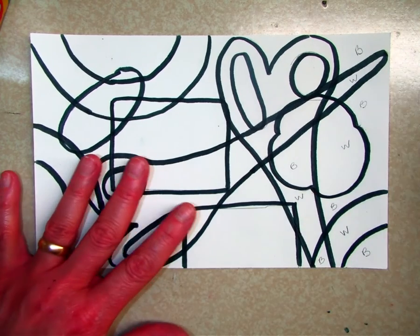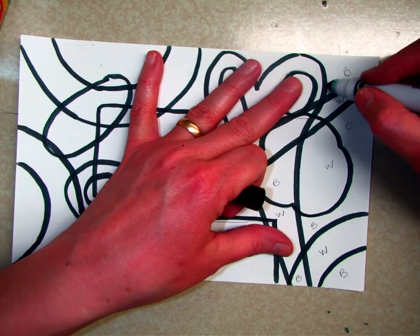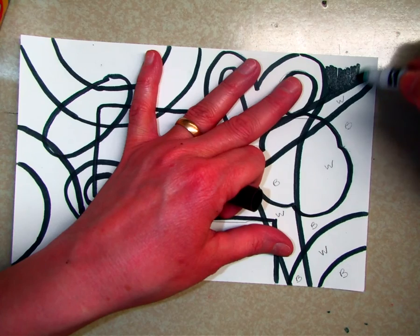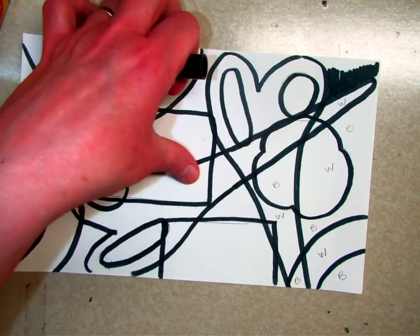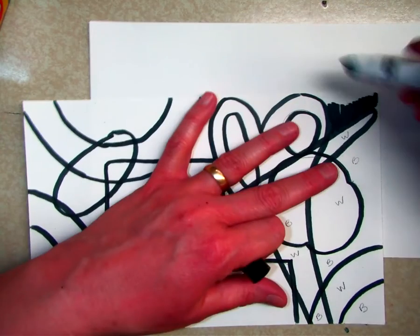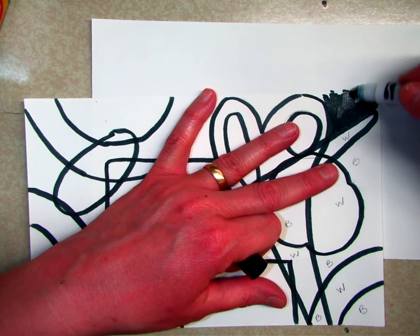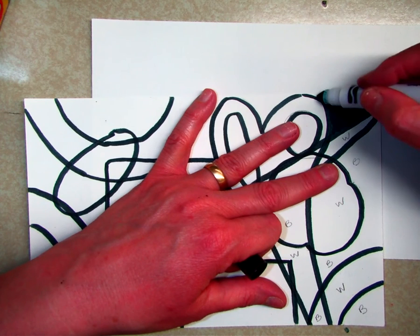And once you are done, you can go ahead and take a marker or crayon or whatever and start coloring that space so that it is completely black. It might be a good idea for you to put something underneath here so that you can go all the way to the edge. Try to color in one direction when you're doing this so it doesn't look sloppy, so it looks nice and neat.